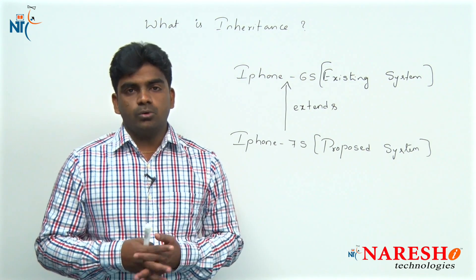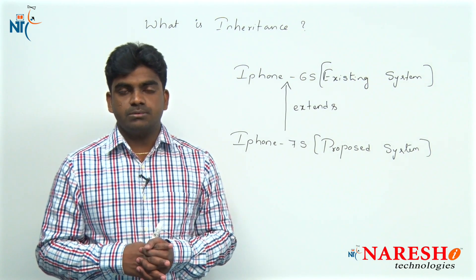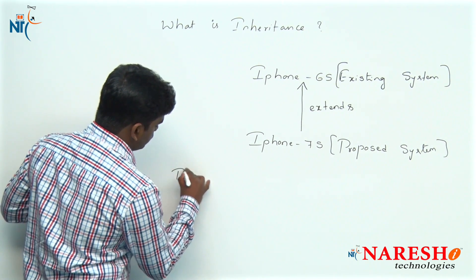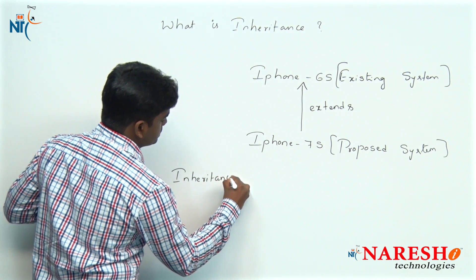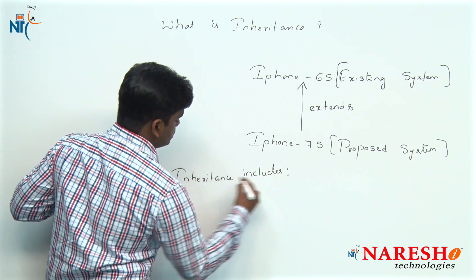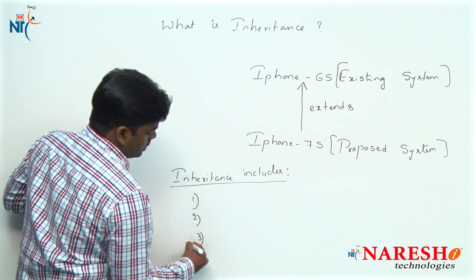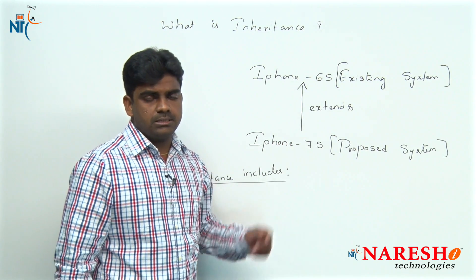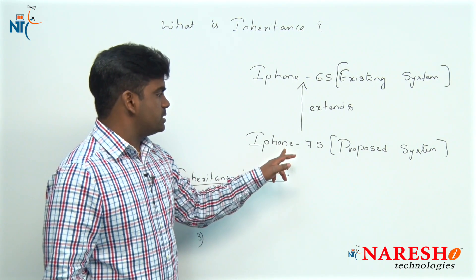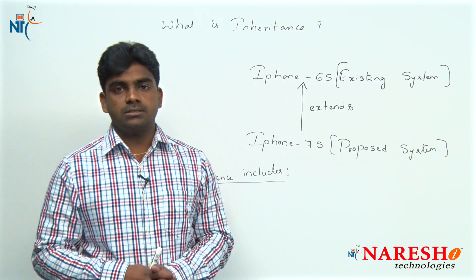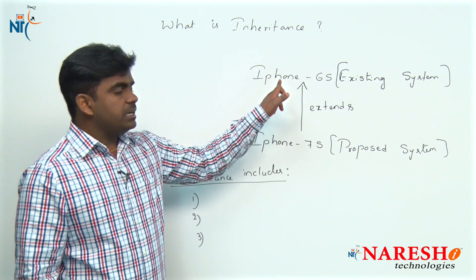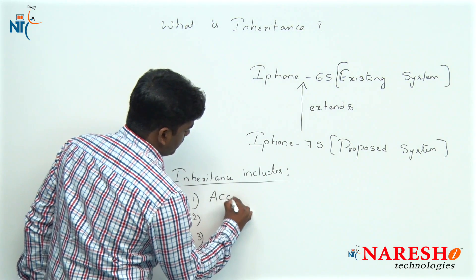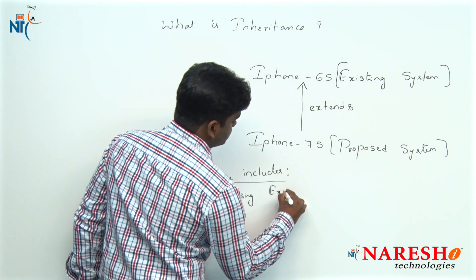What does inheritance mainly include? Inheritance includes exactly three things. Suppose we are using an iPhone 6s and we want to purchase a 7s — that purchase decision is like implementing inheritance. The first thing: whatever features are available in 6s are definitely available in 7s as well. That is what we call accessing existing object functionality.